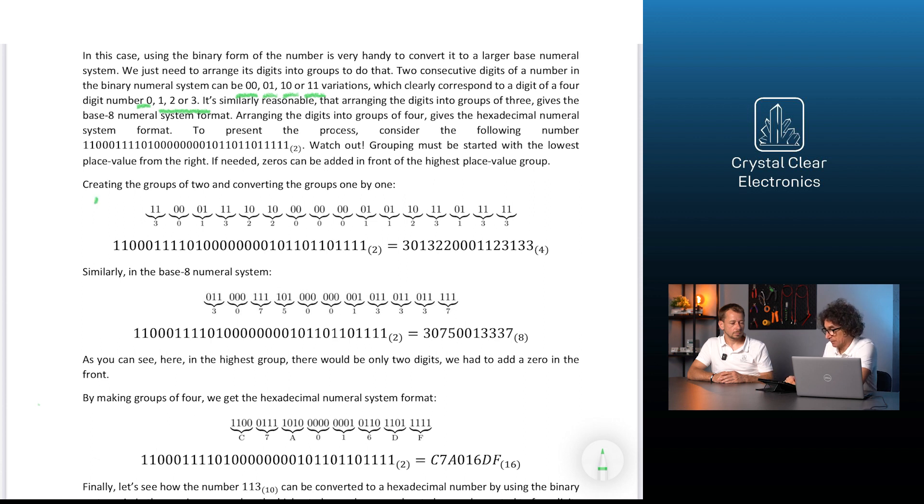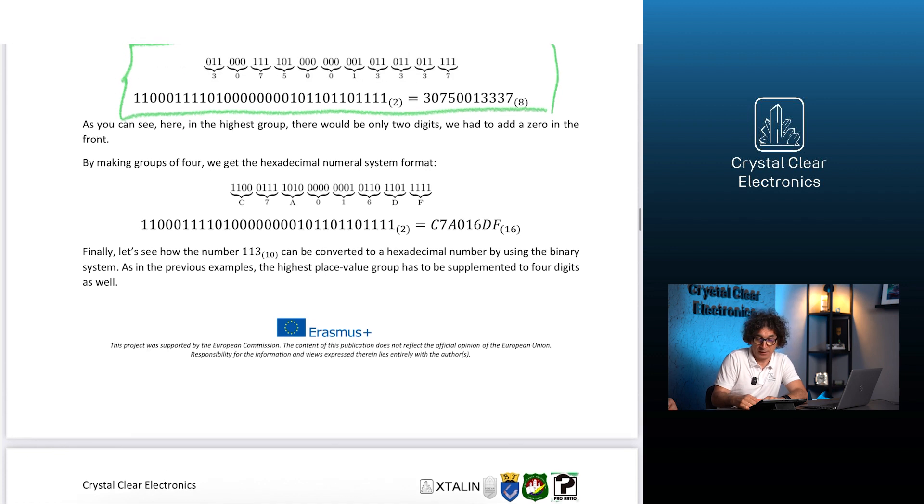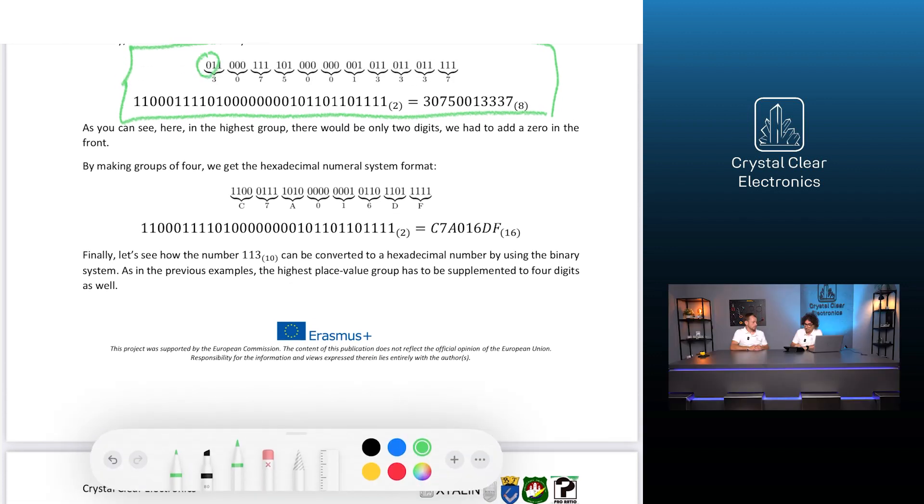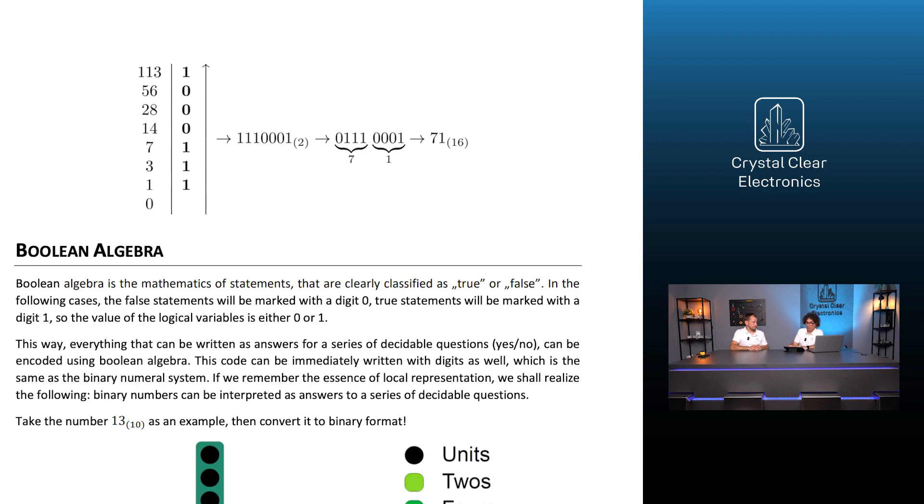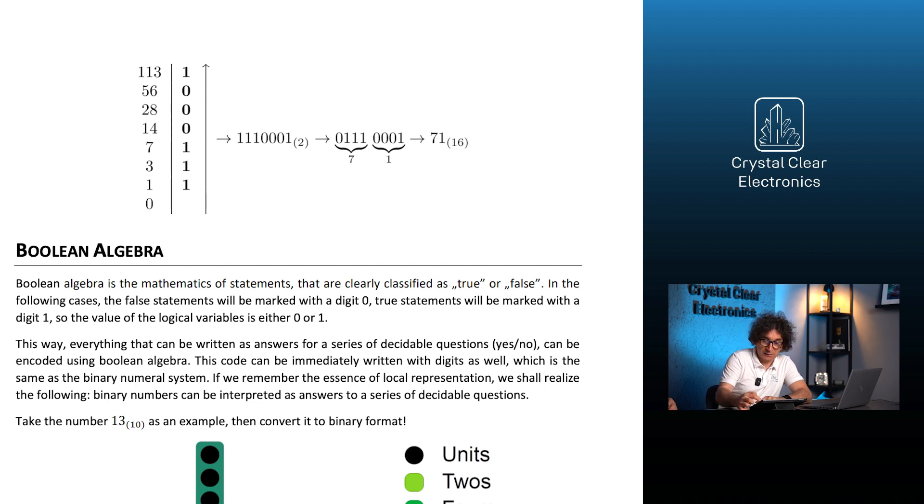Let's look at the groups of 2 and convert them to the base 8 numeral system. As you can see, here in the highest group there would be only two digits. We had to add the 0 in the front. By making groups of 4, we get the hexadecimal numeral system format. Finally, let's see how the number 113 can be converted to a hexadecimal number by using the binary system. As in the previous examples, the highest place value group has to be supplemented to 4 digits as well.